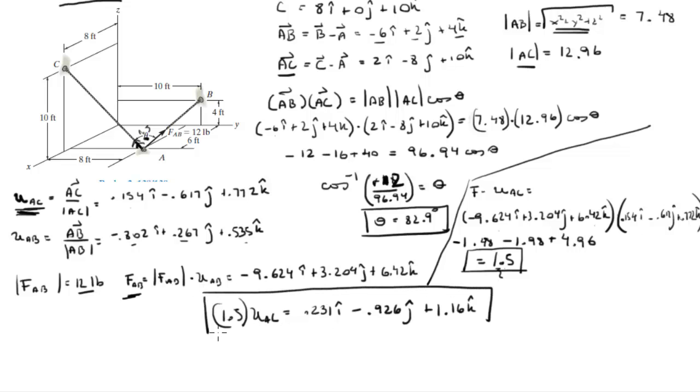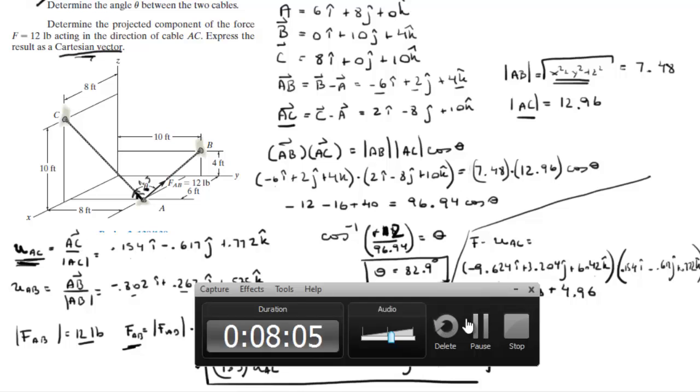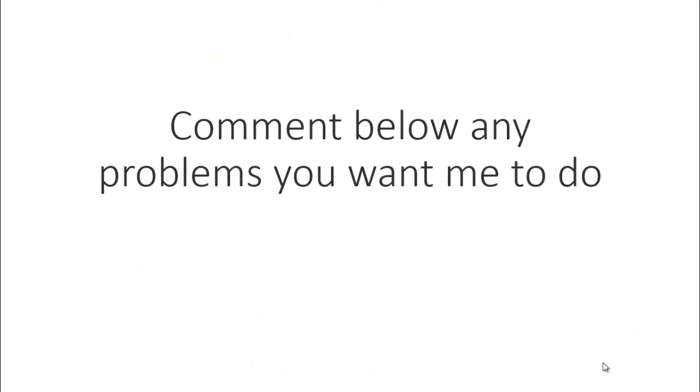Final answer for the second part. This is the Cartesian vector form of the projection of FAB along AC. Please comment below if you want me to do any problems and I'll be happy to help. Thank you.